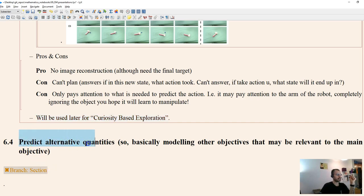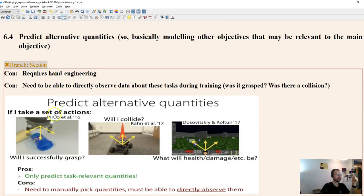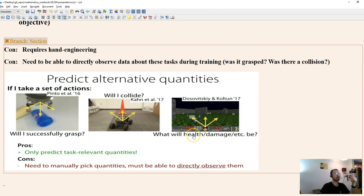Now, lastly, we can kind of get in there and engineer things by predicting some alternative quantities, where predicting those quantities may help us plan for the main task. This requires some hand engineering, and we might predict things like, will it successfully grasp, will it collide, things like that. So we need some hand engineering, but of course, this can work quite well if we engineer it well. So that's a quick overview of these advanced approaches, which it seems like, with some engineering, we can get some decent results.